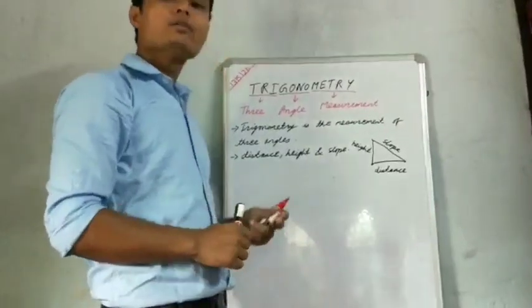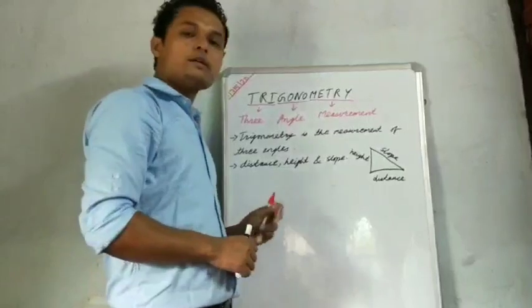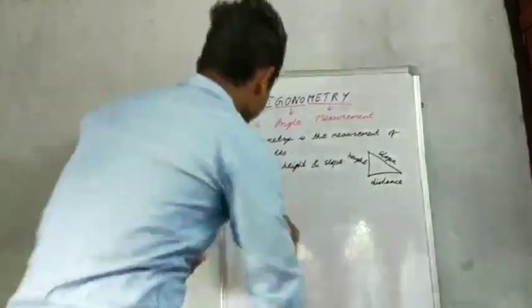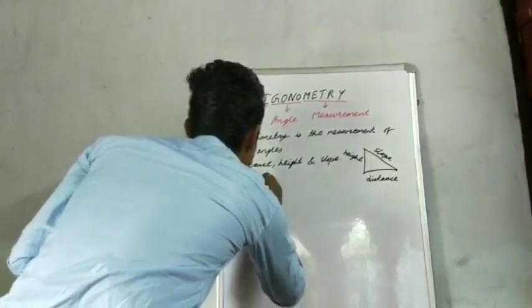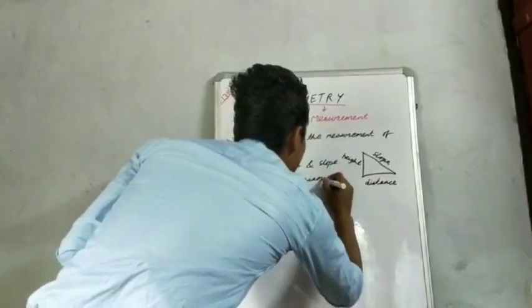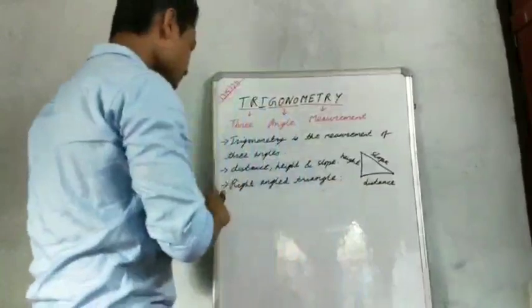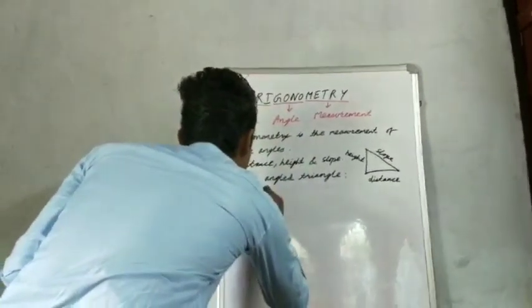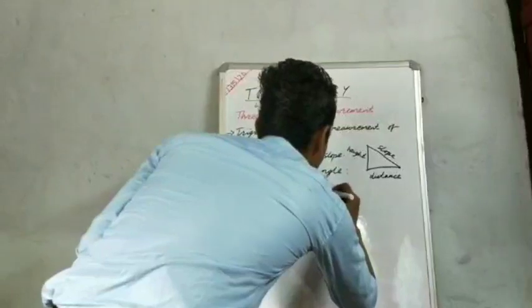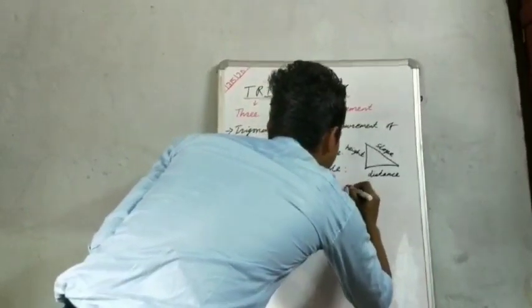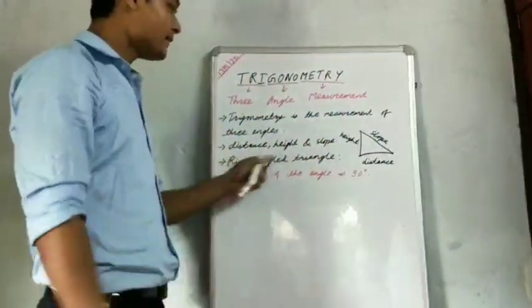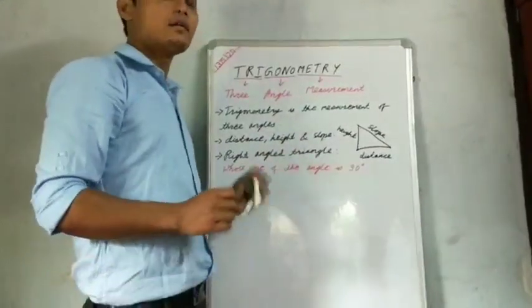So the question is, what is a right-angle triangle? A right-angle triangle is a triangle whose one of the angles is a right-angle, or 90 degrees.